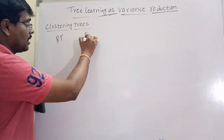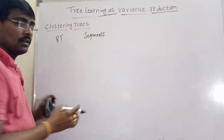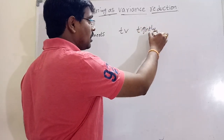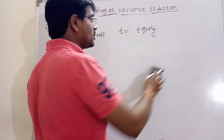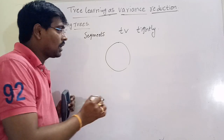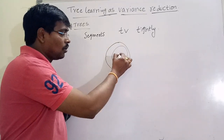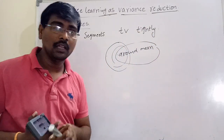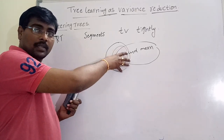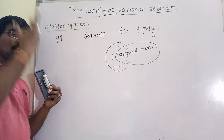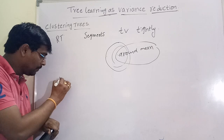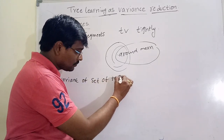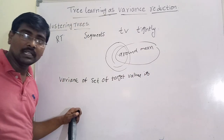Remember the definition of a regression tree: the regression tree finds an instance space segment whose target values are tightly clustered around the mean of the cluster. That means by using a regression tree, I am constructing a cluster tree. The variance of the set of target values is the average squared Euclidean distance.